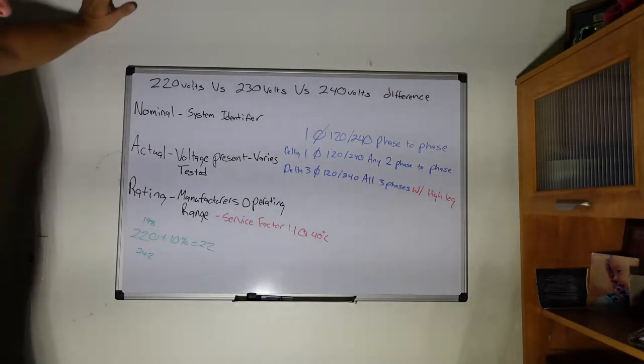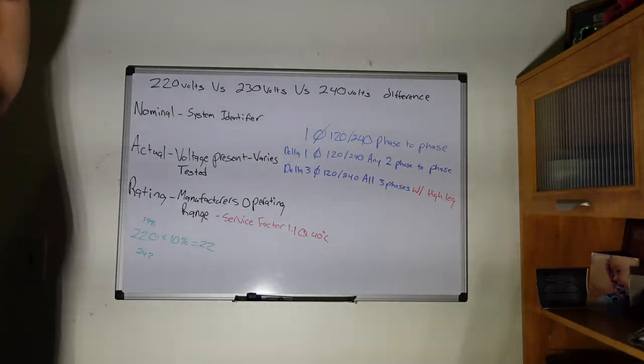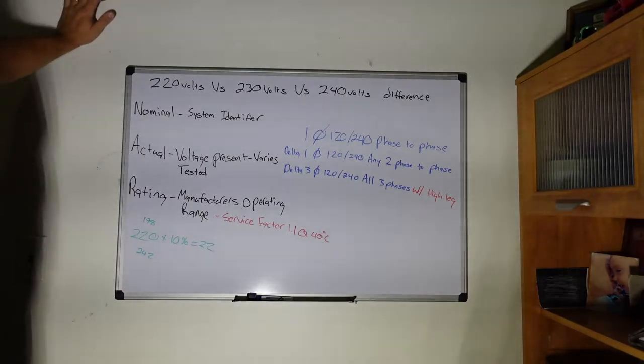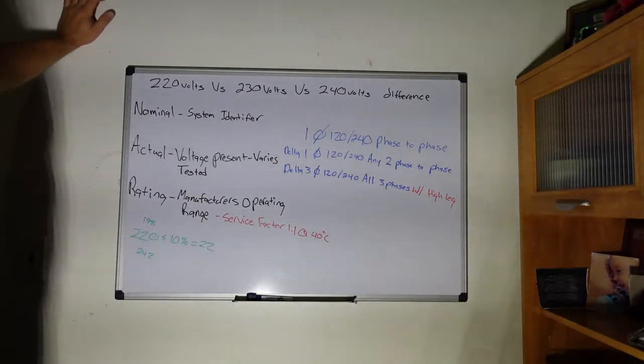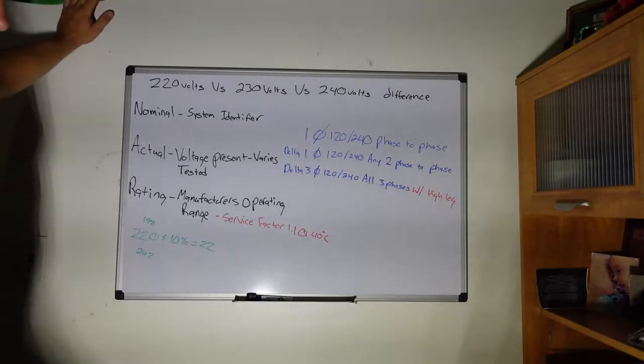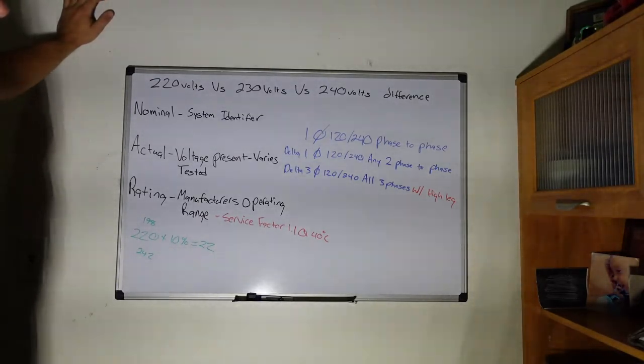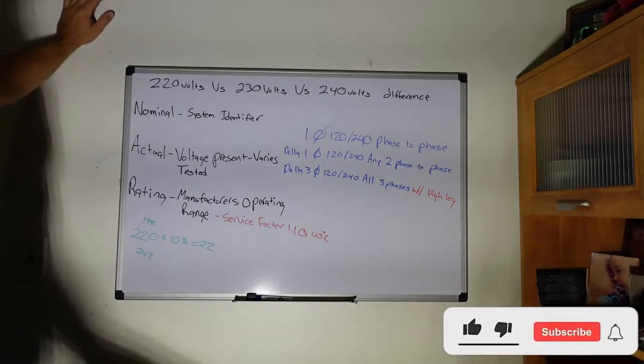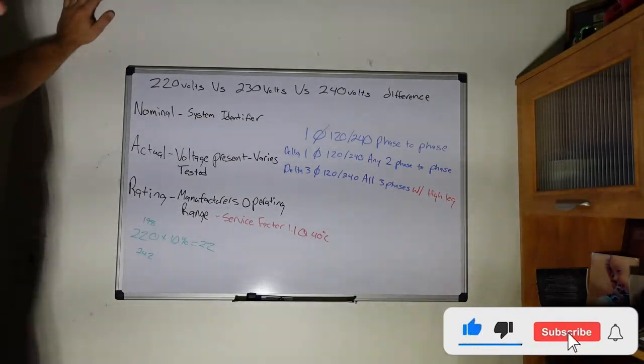So to clarify once again, there is no difference between 220, 230, and 240. I get calls all the time: 'Hey, will this operate fine? I got 240 coming off the utility. My motor says 220 on it, or my equipment says 220.' So yes, it will operate. It will not blow anything as long as all your equipment is rated within that range. You're good to go.